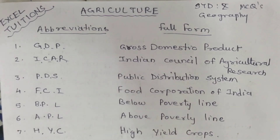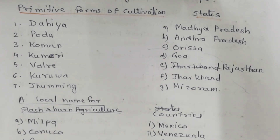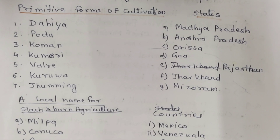Primitive forms of cultivation and their names by state: Dahiya - Madhya Pradesh; Podu - Andhra Pradesh; Koman - Orissa; Kumeri - Goa; Walre - Rajasthan; Kuruwa - Jharkhand; Jhum - Mizoram.